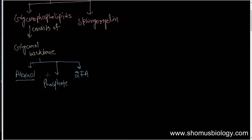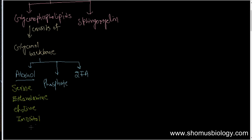In the alcohol part, what are the contents present? It can be serine, it can be ethanolamine, or it can be choline. It can also be inositol or glycerol. Based on the type of alcohol content present, we give them different names: phosphatidylserine, phosphatidylethanolamine, phosphatidylcholine, phosphatidylinositol, phosphatidylglycerol — all these things.